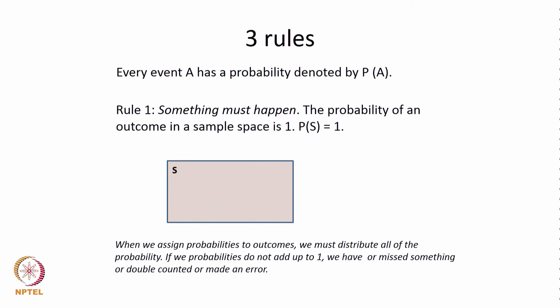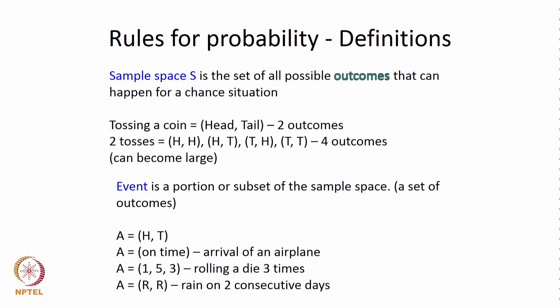There are three important rules in probability. Every event has a probability denoted by P(A). The first rule is called something must happen: the probability of an outcome in a sample space is 1. When we assign probabilities to outcomes we must distribute all of the probability — if the probabilities do not add up to 1, we have missed something, double counted, or made an error. For example, head and tail each have probability of half, and it adds up to 1. For two tosses — head-head, head-tail, tail-head, tail-tail — there are 4 equally likely outcomes each with probability 1 by 4, and the probabilities add up to 1.